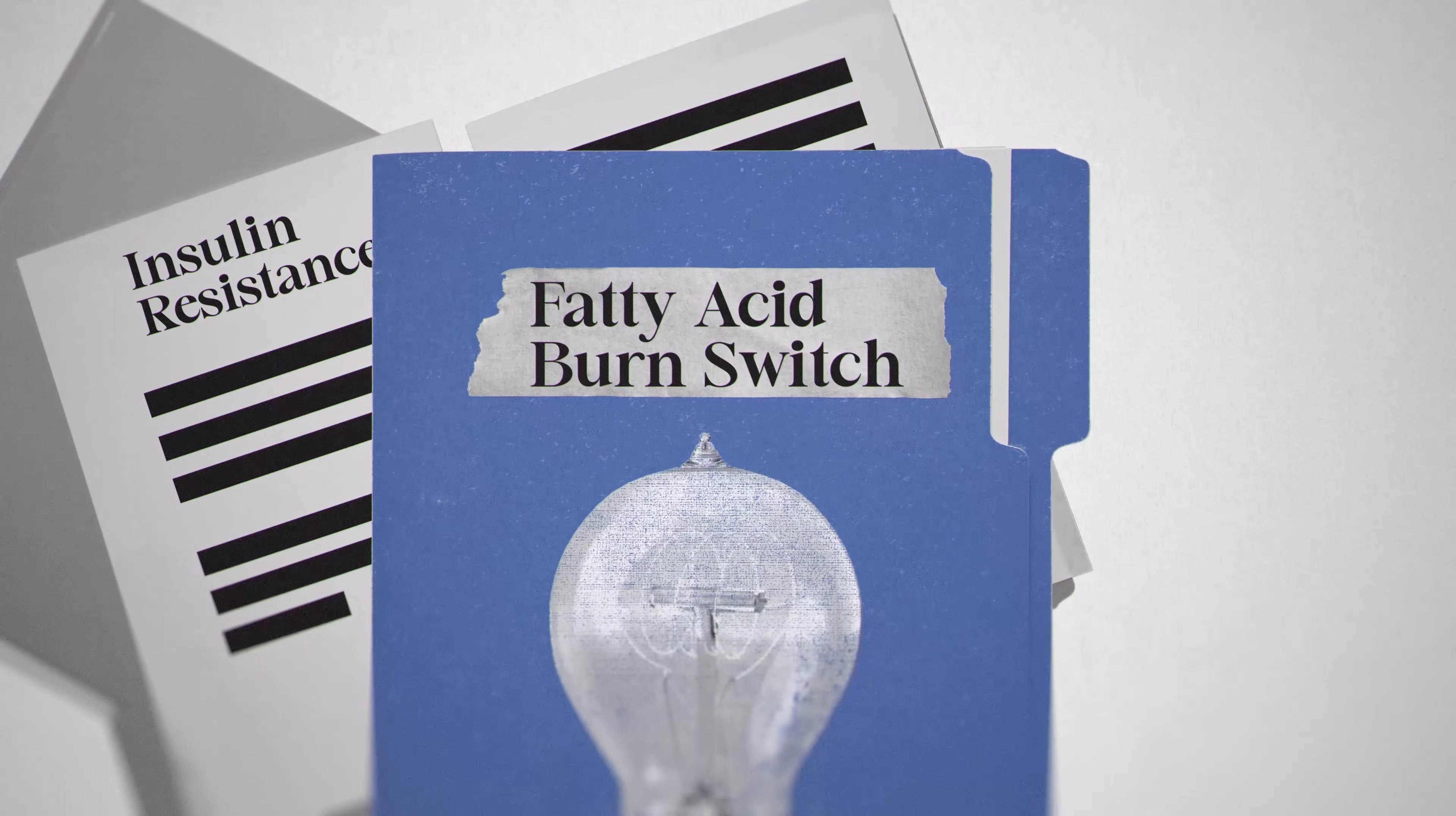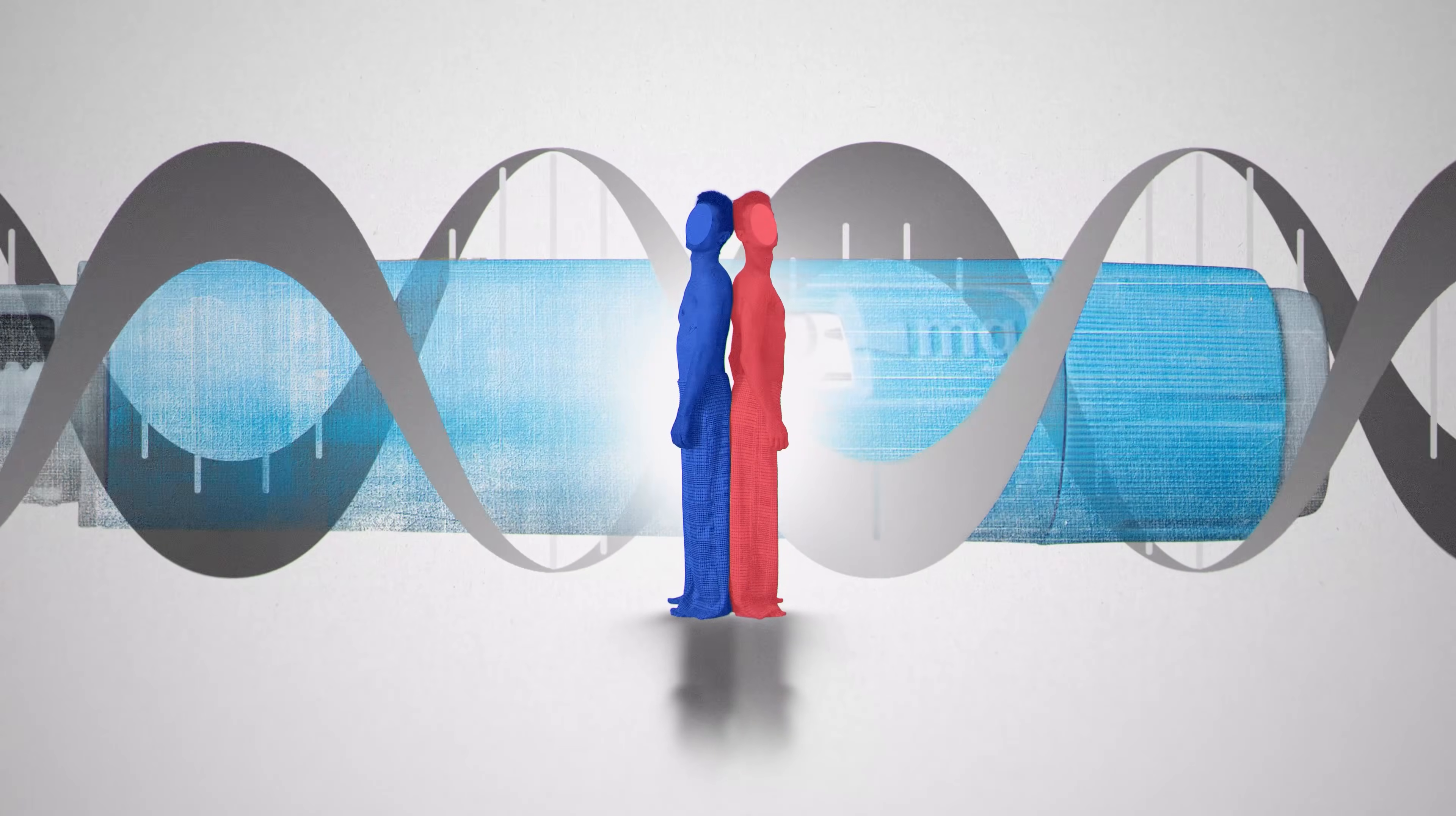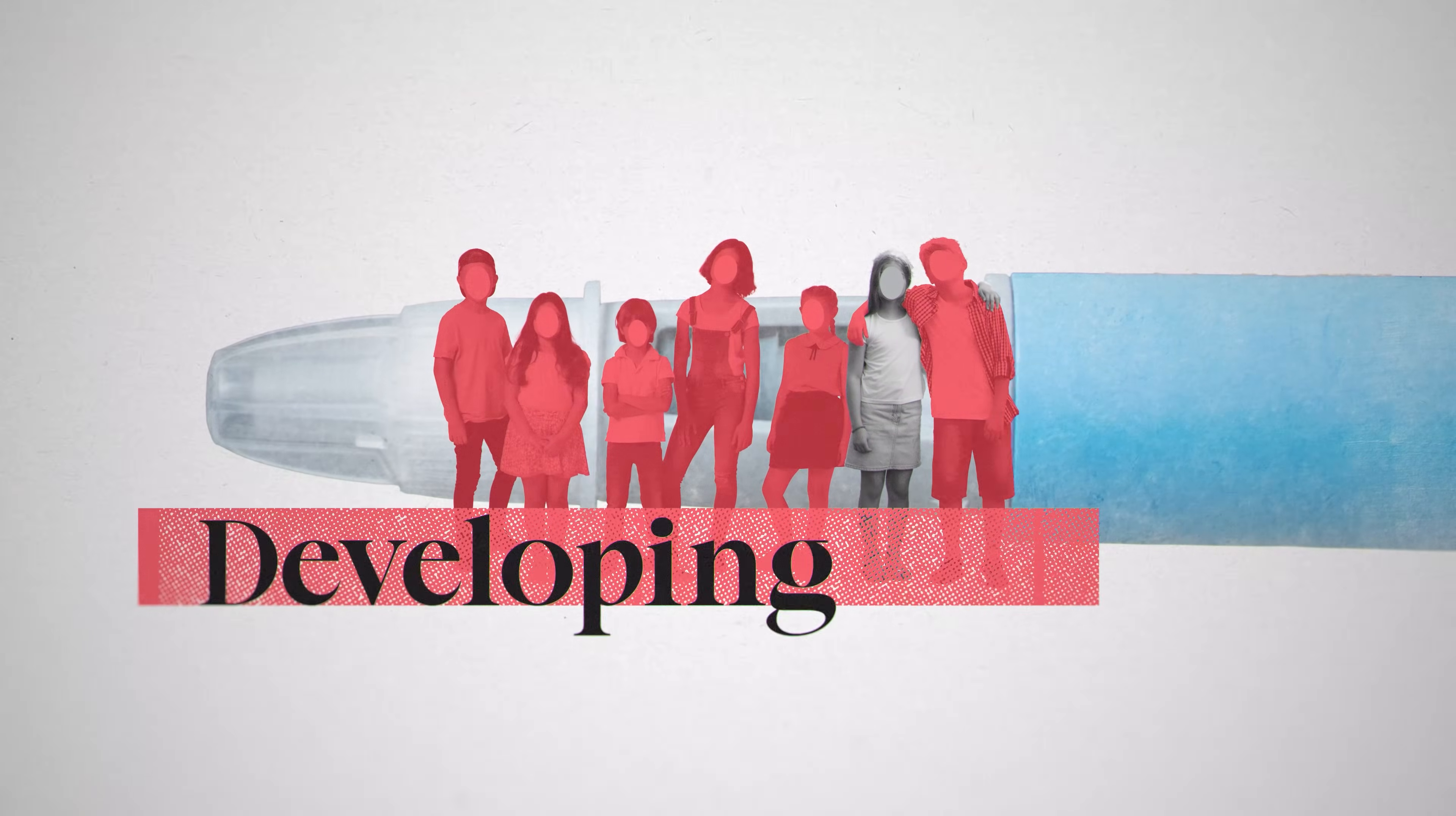This theory explains things the theory of insulin resistance never could. Why both obese and thin people can get diabetes. Why one sibling in a family can get diabetes and another one doesn't. Why pregnant women develop and then recover from gestational diabetes. Why even children whose cells are young and healthy are developing type 2.